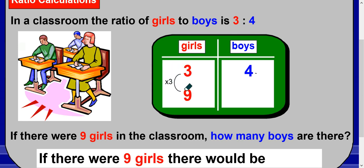So we've got to do the same to the other side: times it by 3 also, which makes 12. For 9 girls in the class, it would be 12 boys in a ratio of 3:4.